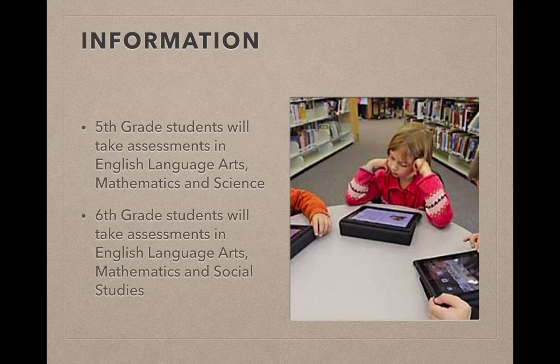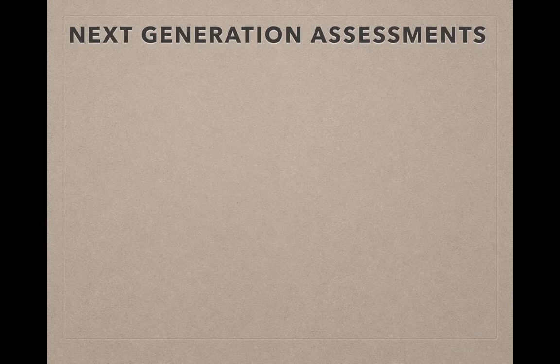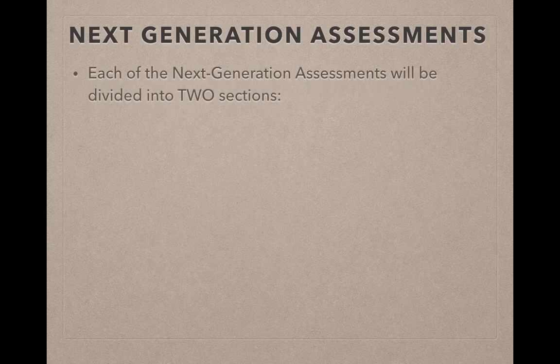The next generation assessments are slightly different than what we've experienced before with the OAAs. The first piece that is different is that these are going to be online tests, so students will take these assessments on school-issued iPads. You will also notice that these assessments are in two different sections of the year — the first section is about 75% of the way through the school year, and the second section is about 90% of the way through.